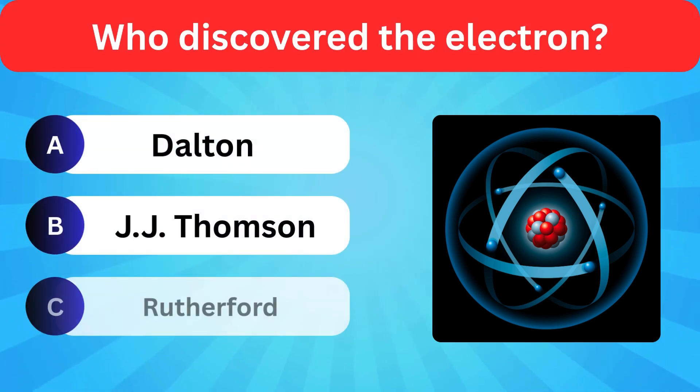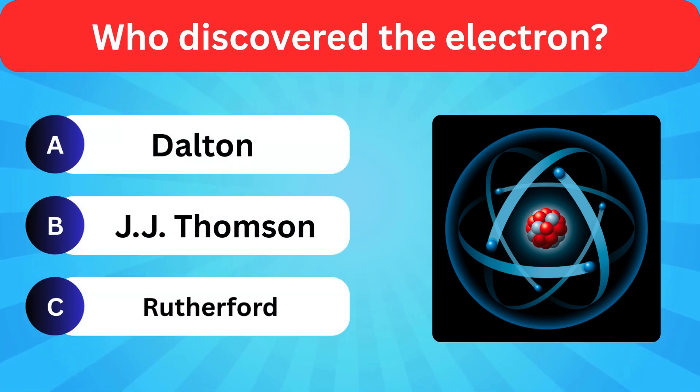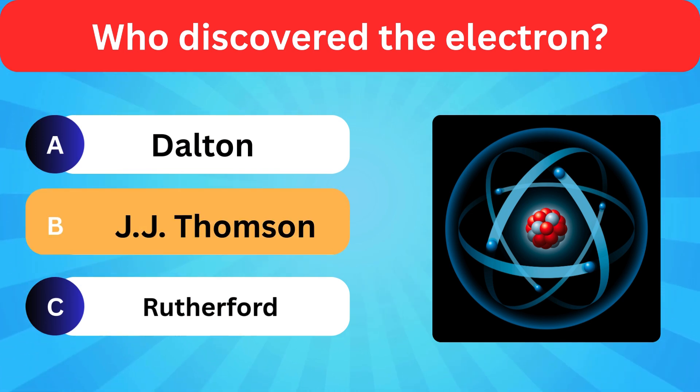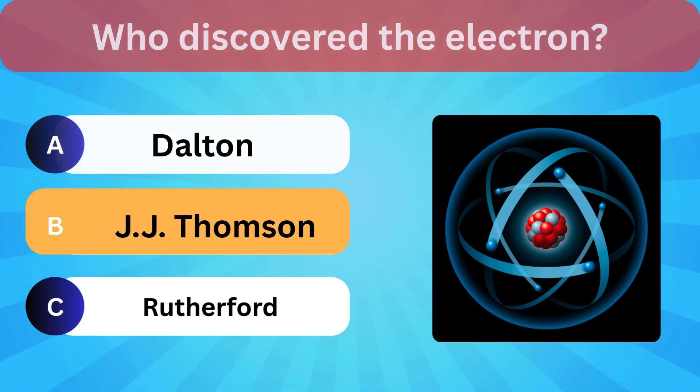Who discovered the electron? Options: Dalton, J.J. Thompson, Rutherford. Correct answer is J.J. Thompson.